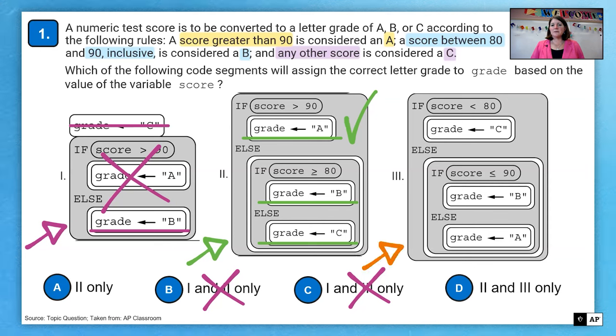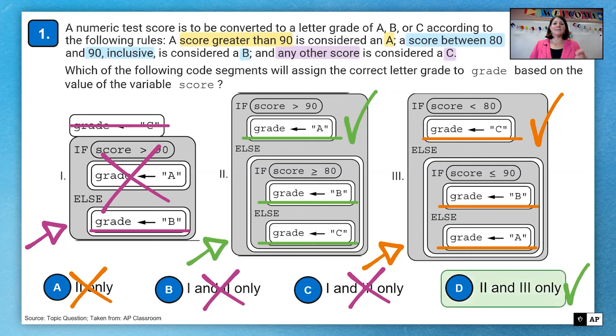And then we'll look at option three. If the score is less than 80, we assign the grade C. If the score is less than or equal to 90, we assign the grade B. And otherwise, we assign A. Again, that goes the other direction, but it seems to assign the correct values. And so we're going to say three is an answer as well. So two and three give us the correct answers. So the answer here is D.